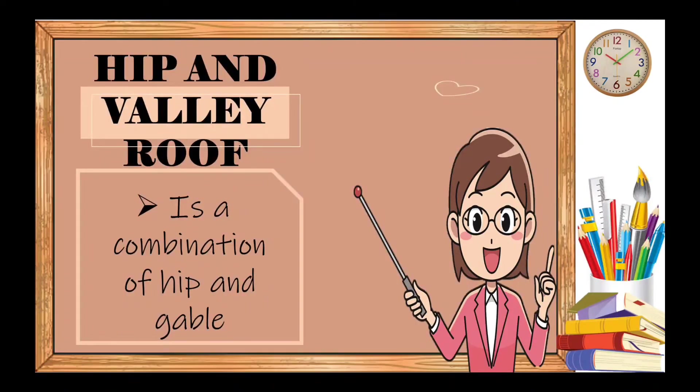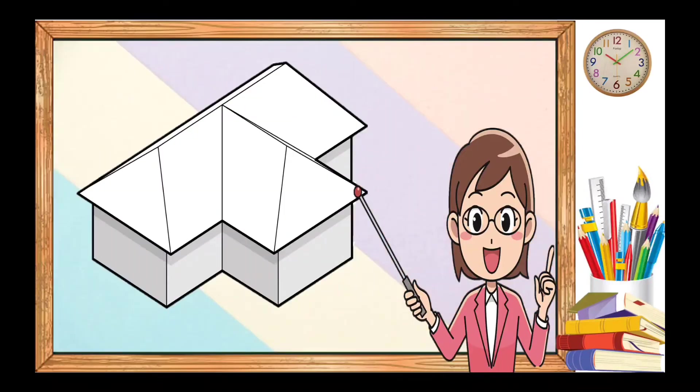We also have hip and valley roof. It is a combination of hip and gable. It is simply a modified or extended hip roof. The shape and pitch of the surfaces are basically the same. However, the base shape changes from a simple rectangle to a letter T or letter L shape on plan.